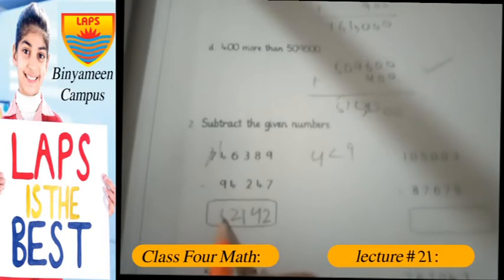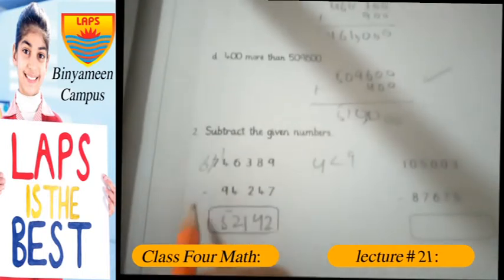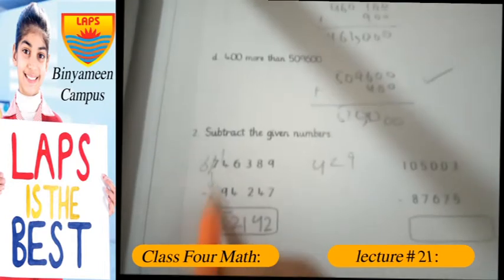When we carry, 9 becomes 6. We will add 6 as it is because we have nothing to subtract from 6, so this is the answer.